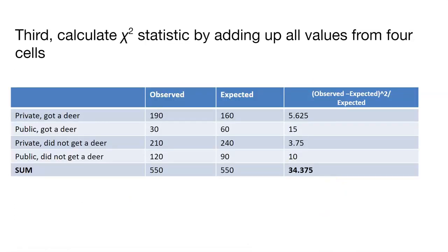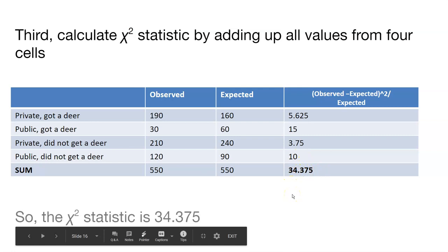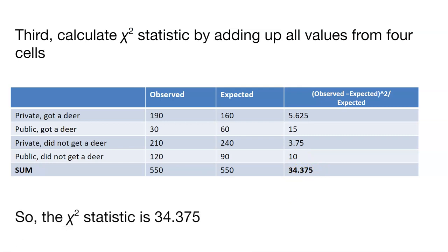The third thing is we'll calculate the chi-squared statistic by adding up all of the values from the four cells. Remember the chi-squared statistic looks at the observed values and the expected values that we just calculated. Then it takes those values, squares them, and then divides by the expected value. That's what this last column is doing here in the table. When we add all those values up, we get 34.375. So we can say the chi-squared statistic is 34.375.